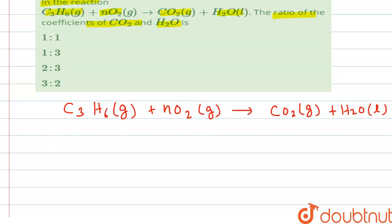Now we have to balance this and find the ratio of coefficients of CO2 and H2O. We can see that here we have C3H6, so we will rewrite the equation.